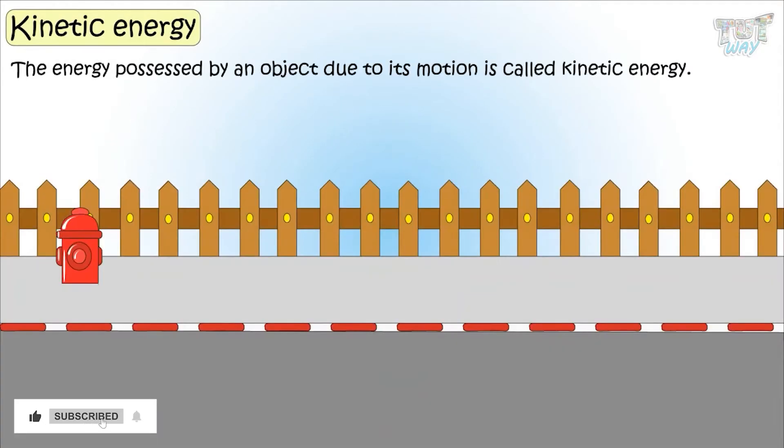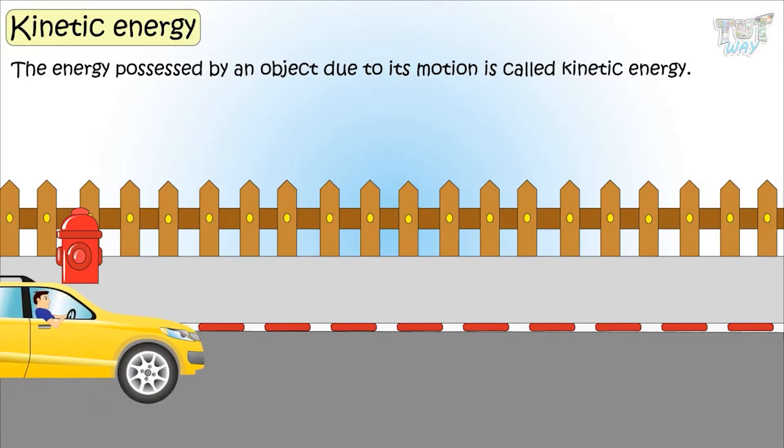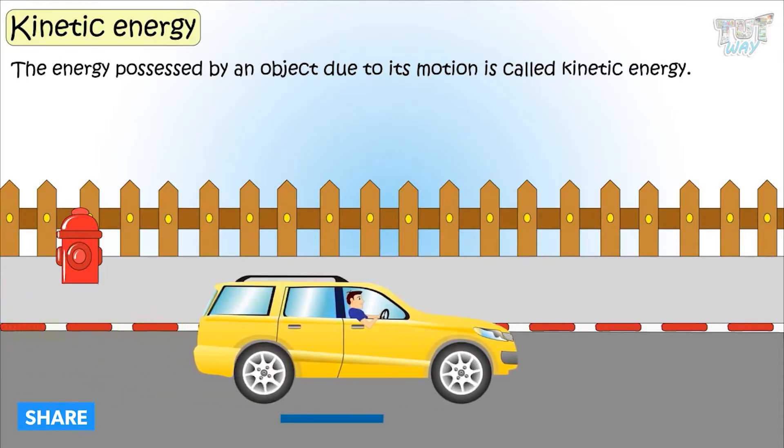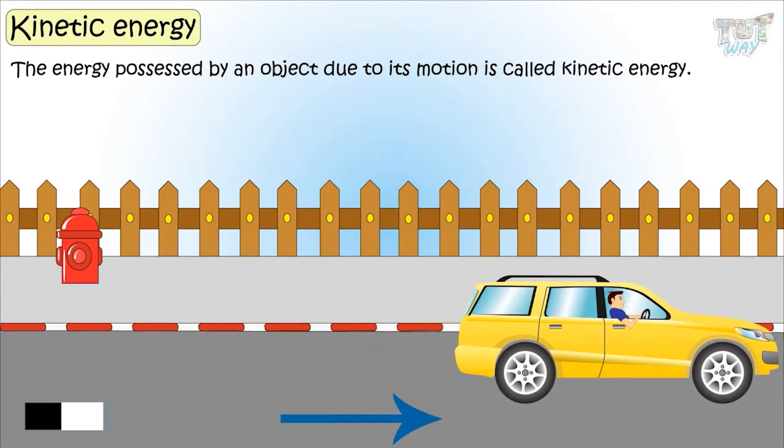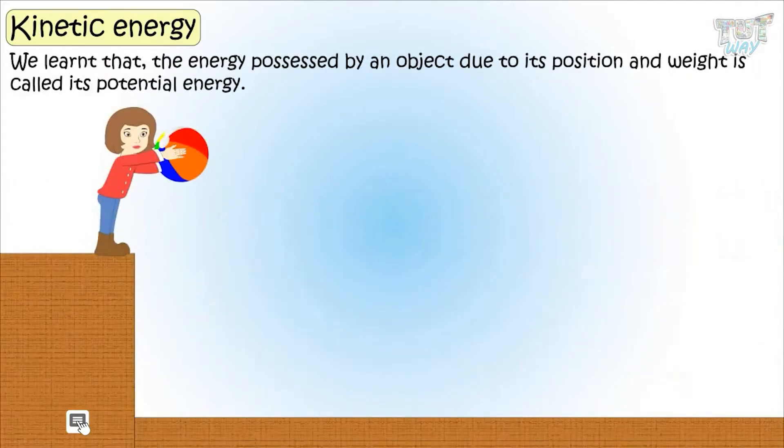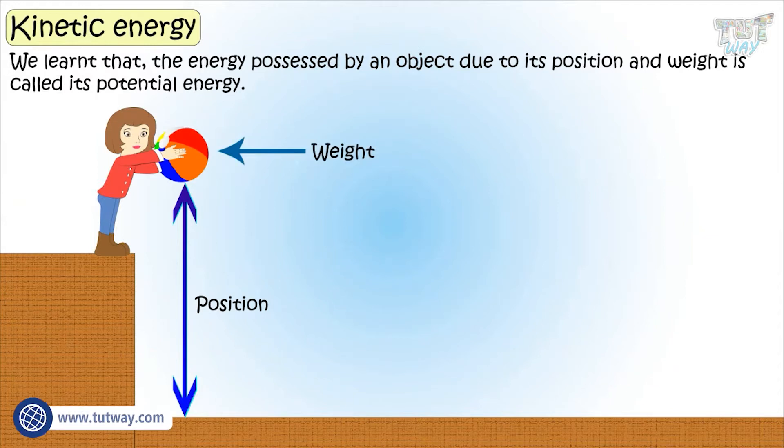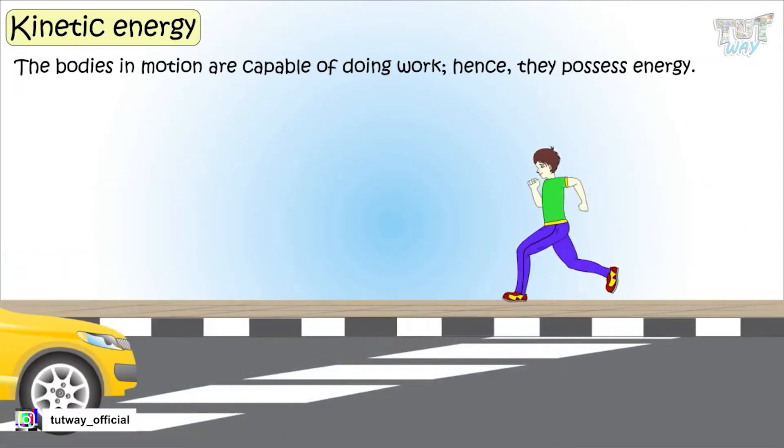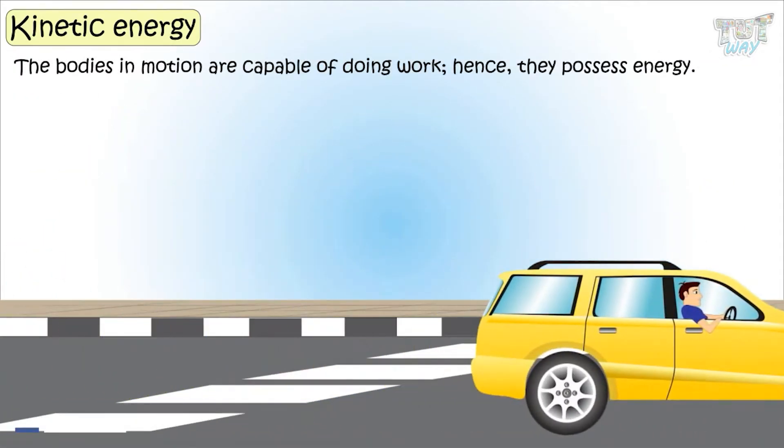Kinetic energy. Energy possessed by an object due to its motion is called kinetic energy. We learned that energy possessed by an object due to its position and weight is called its potential energy. The bodies in motion are capable of doing work and hence possess energy.